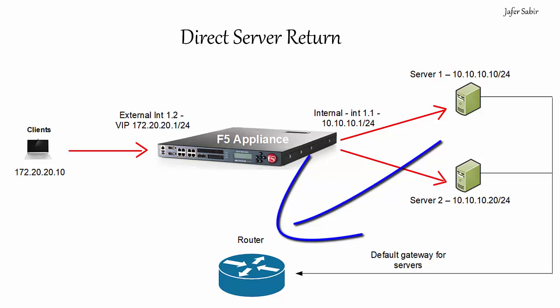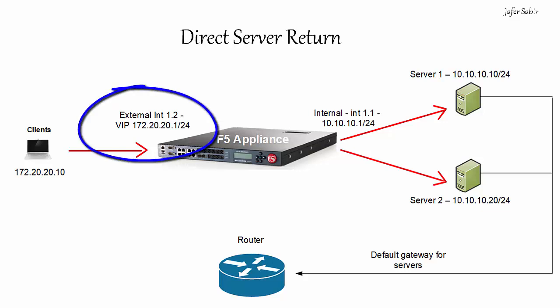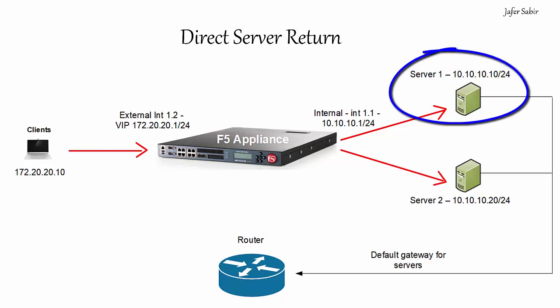The server sends the traffic back to the router instead of the F5 appliance. To route back to the client on a different subnet, the server uses its default gateway — and if that's the router and not the F5, the return traffic goes via the router. The client then receives the packet directly from the server, which it was not expecting — it was expecting return traffic from the F5 VIP address, since that was the address the client initiated the connection to. The client therefore drops the traffic.